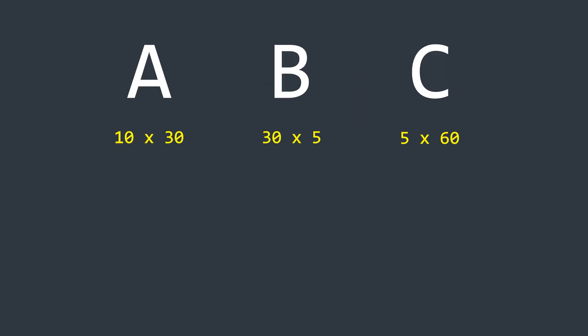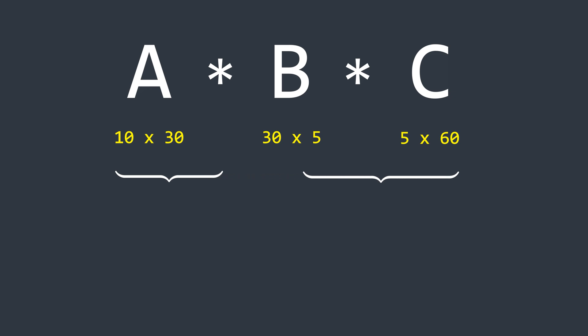Next, let's consider three matrices A, B, and C with given dimensions that we need to multiply together. There are two possible ways: first multiply A and B, then multiply the result with C; or multiply B and C first, then multiply the result with A. Both approaches produce the same final result, but they may require different numbers of operations.